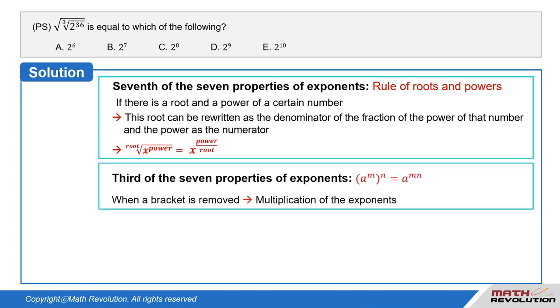Third of the seven properties of exponents. One of the most important of the properties of exponents is when a bracket is removed, it results in the multiplication of the exponents.